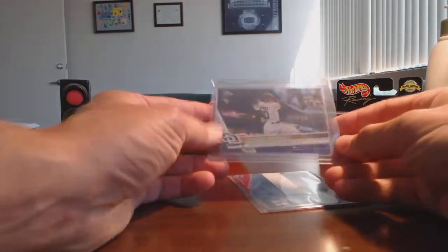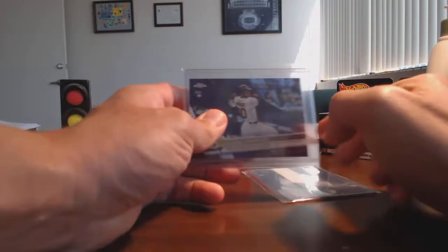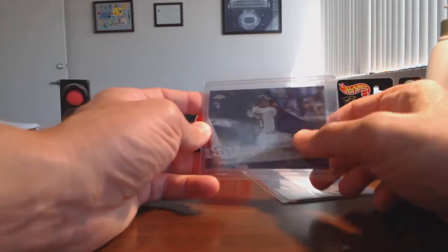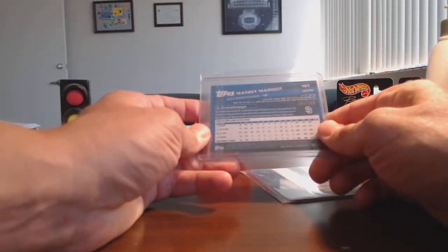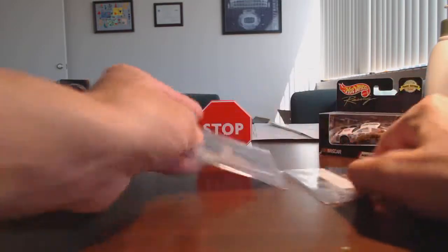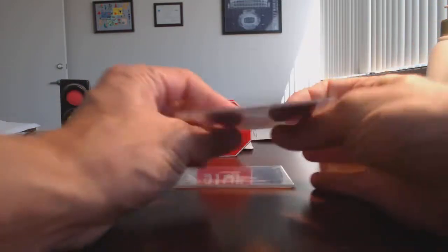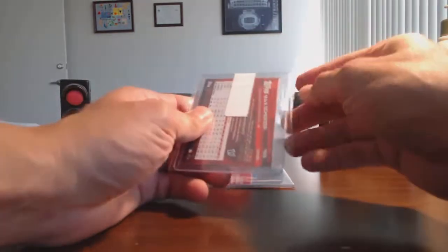Here is a Manny Margot for our local Padres here, purple numbered to 299. And you can't really see it because they taped over it, but it is a Max Scherzer.